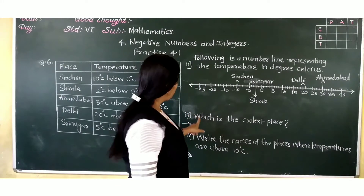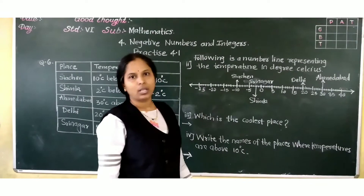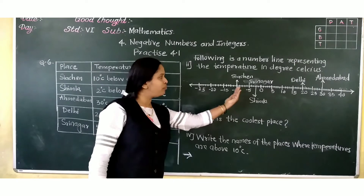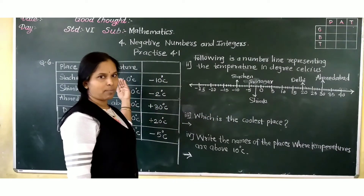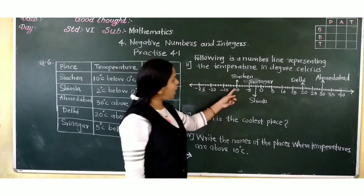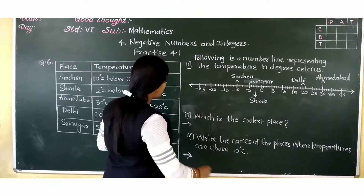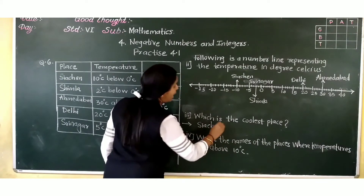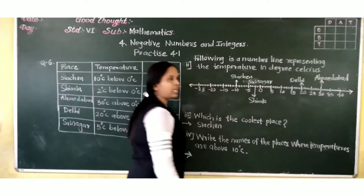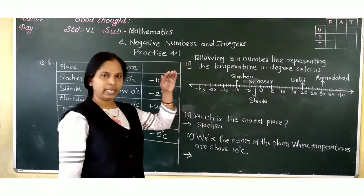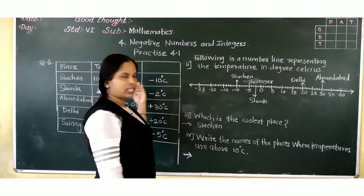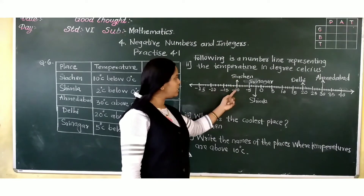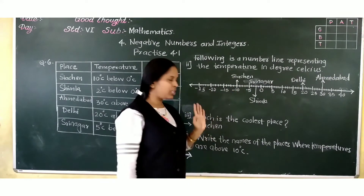Third question C: which is the coolest place? Now which place has a very low temperature? If you move to the left side, the coolest temperature will be there — the most negative value. Minus 10 degrees Celsius is the coolest. So Drass is the coolest place, at minus 10 degrees Celsius.